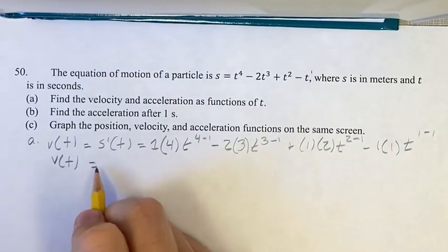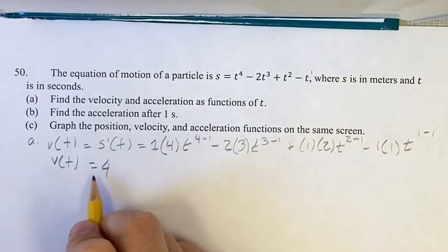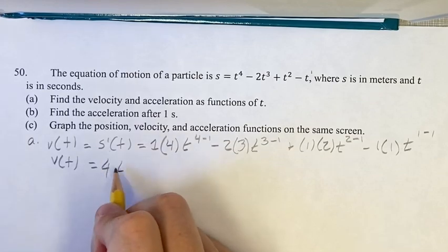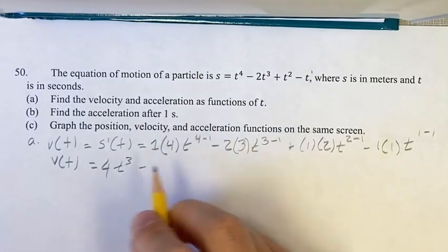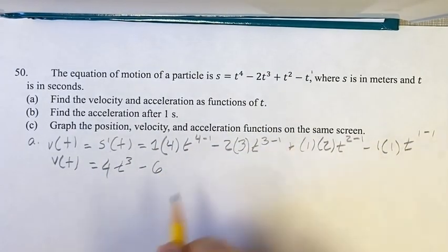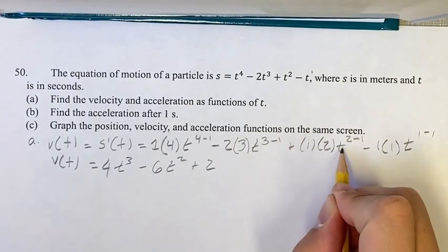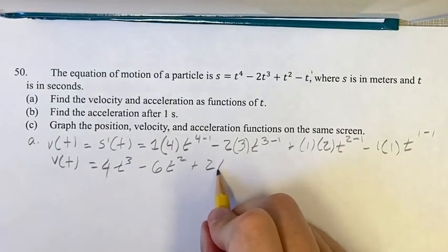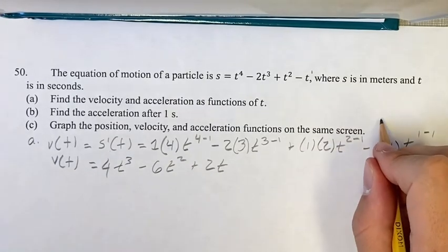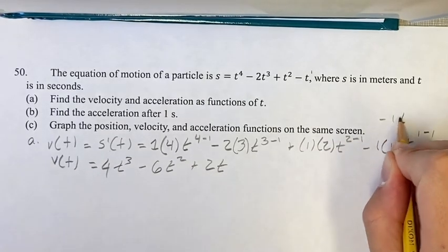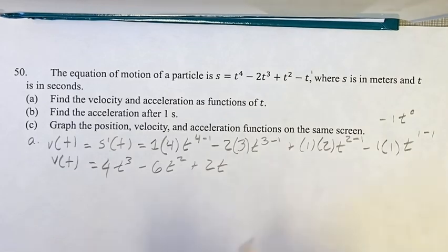Now simplifying this, we get four. One times four is four, t to the four minus one is t cubed. Minus two times three is six, t to the three minus one is t squared. Plus two, t to the two minus one is t to the one, which is just t. Minus one t to the zero. t to the zero is just one, so this is negative one times one, so that's just minus one.